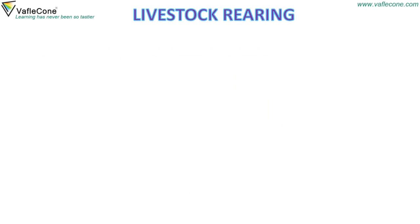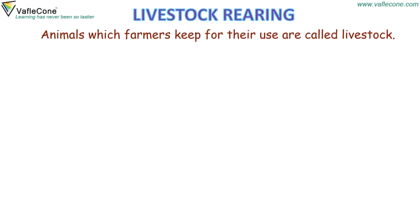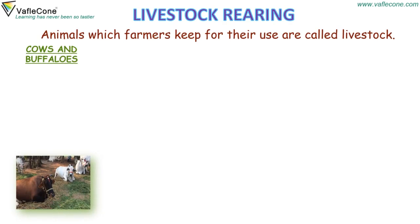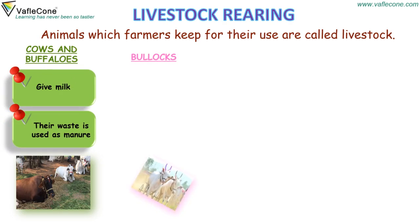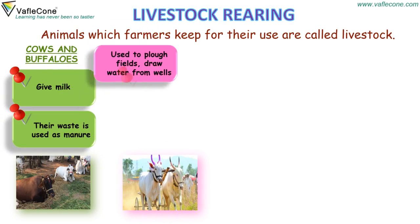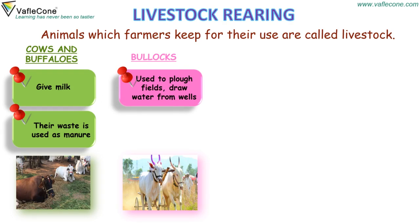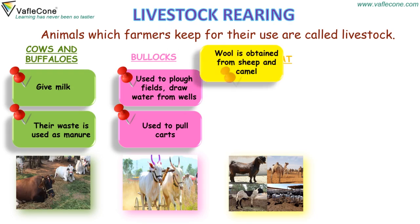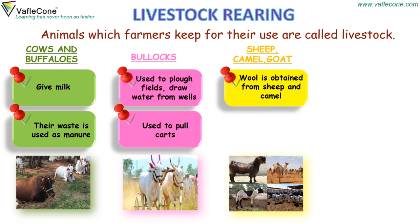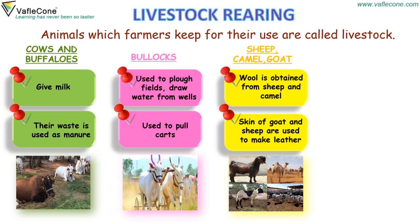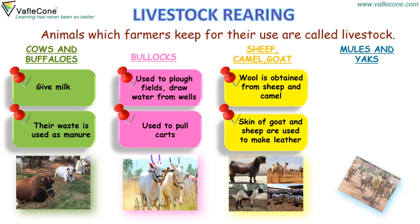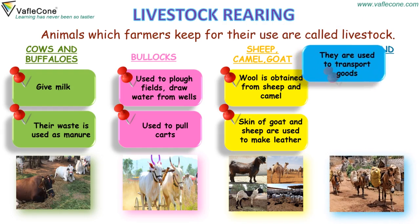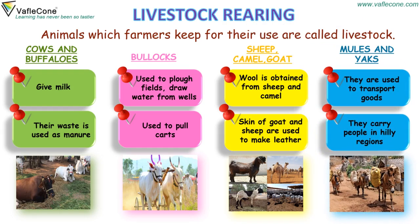Livestock rearing. Animals which farmers keep for their use are called livestock. For example, cows and buffaloes — they give milk and their waste is used as manure. Bullocks are used to plow fields, draw water from wells, and pull carts. Wool is obtained from sheep and camel. Skin of goat and sheep are used to make leather. Mules and yaks are used to transport goods and carry people in the hilly regions.